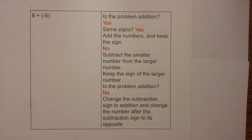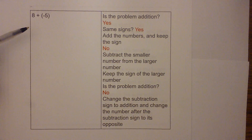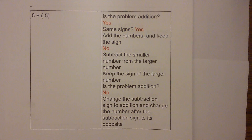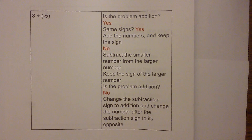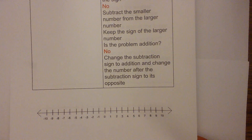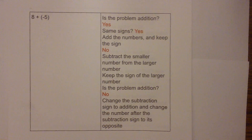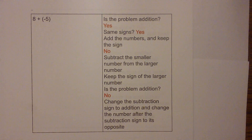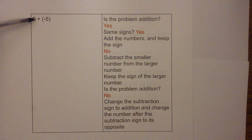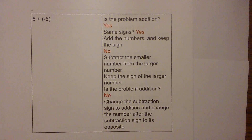In this video I'd like to talk about adding positive and negative integers, and I'm going to work each of these two ways. I'm going to walk through a flowchart and then also complete them on a number line so you can visually see what's taking place. A lot of times it can get a little confusing when you're subtracting a positive or negative number, and hopefully this will clear up some questions.